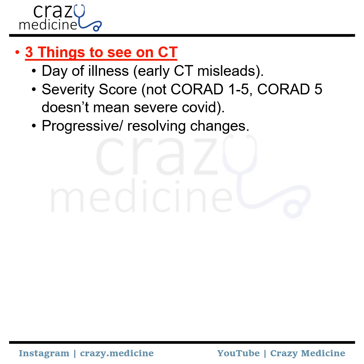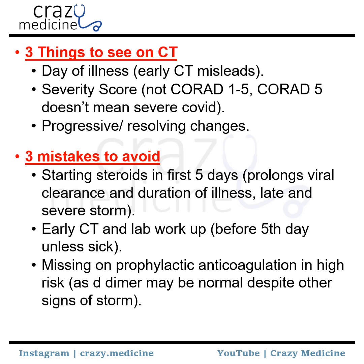Then, three mistakes to avoid. Starting steroids in the first 5 days — avoid starting steroids in initial days because it prolongs viral clearance and duration of illness. Then early CT and lab workup — in the early phase, CT scan may be normal or lab values can be normal, though baseline lab values can be done in certain cases. Missing prophylactic anticoagulation therapy — even if D-dimer is normal, you have to start the patient on anticoagulation or antiplatelets, because we have seen many cases with hypercoagulable state and complications like stroke and myocardial infarction.